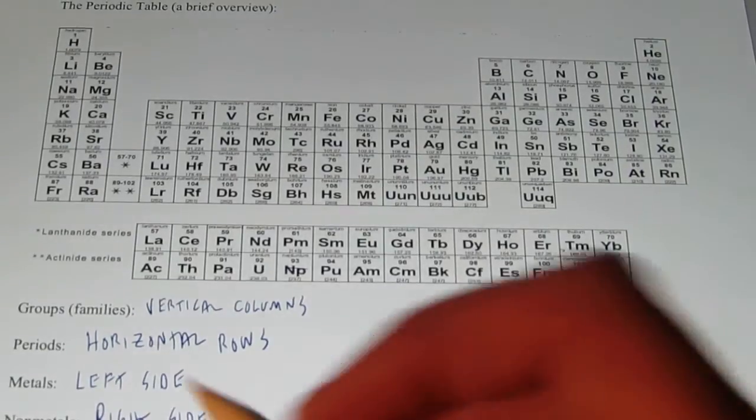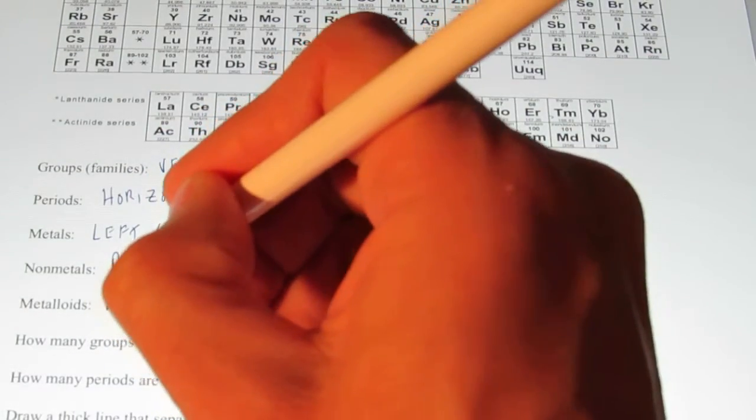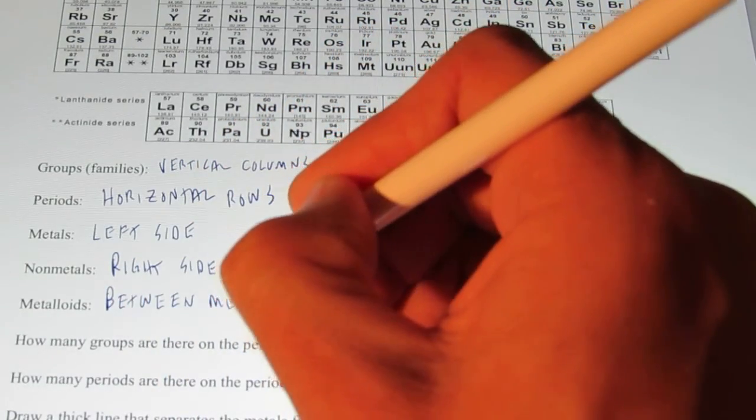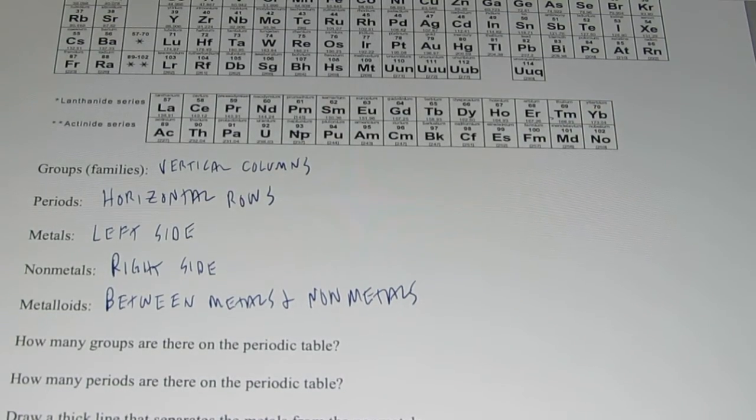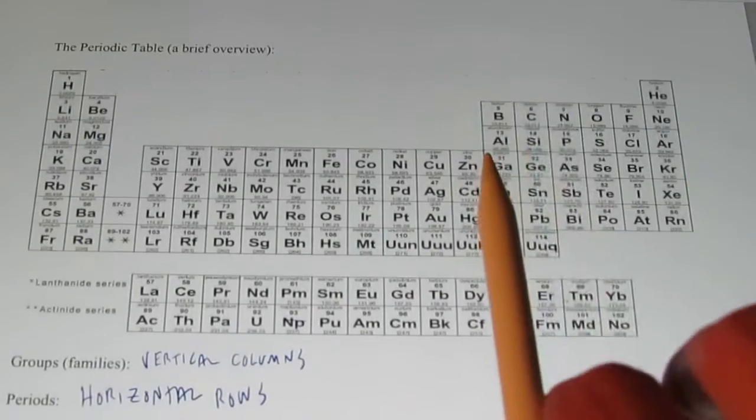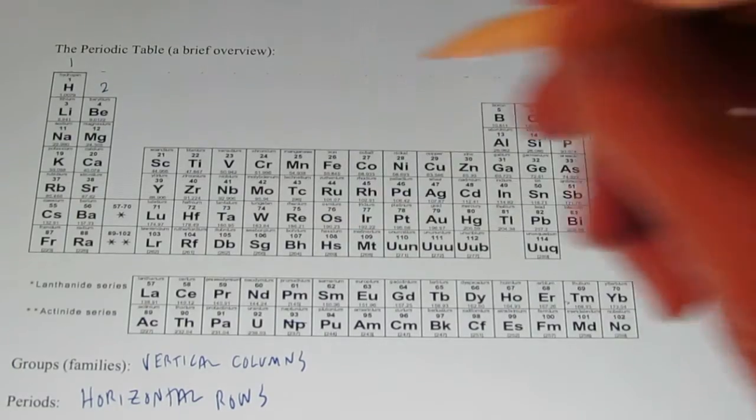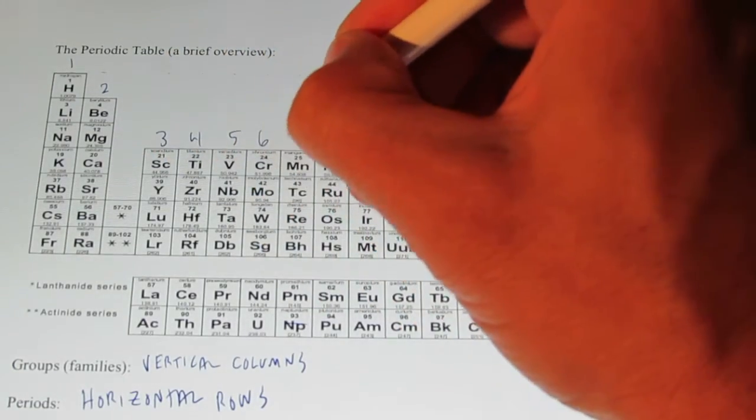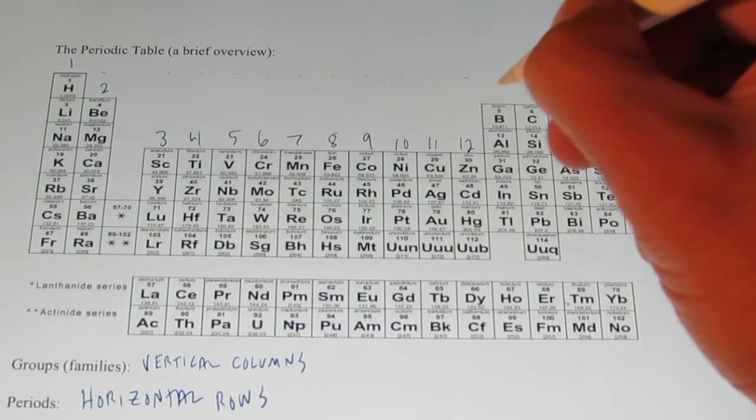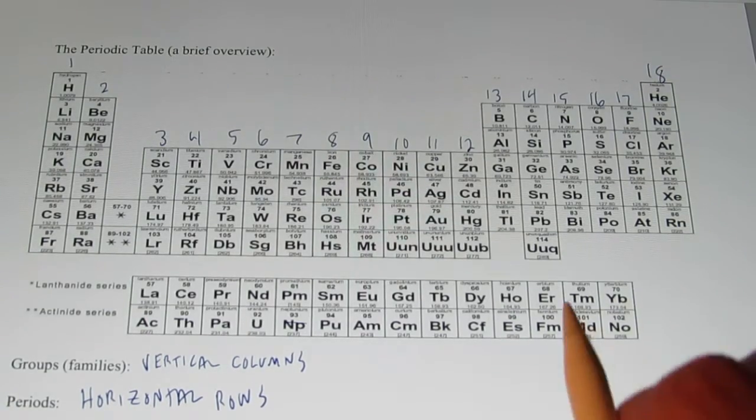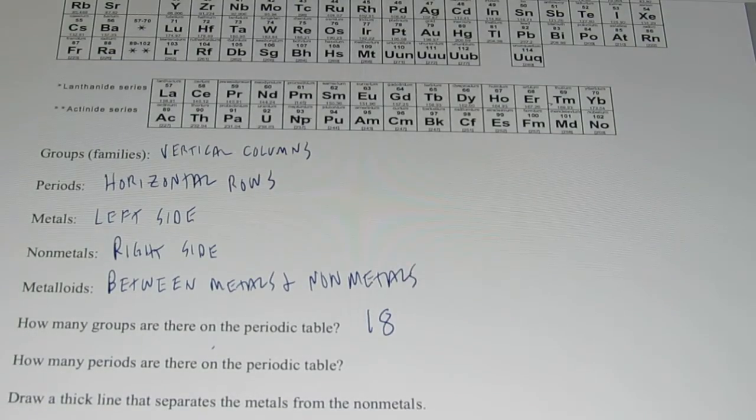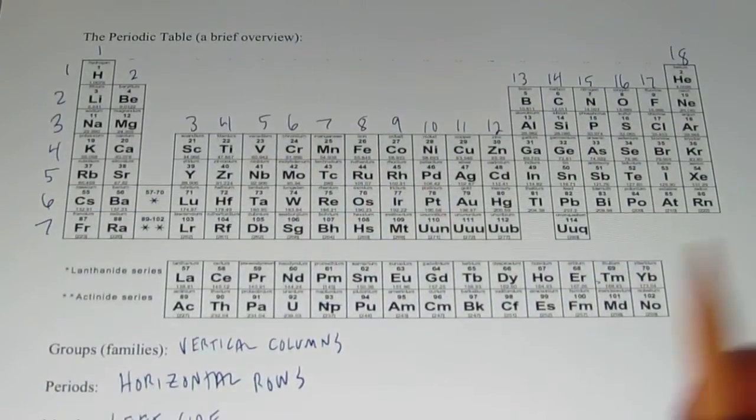The metalloids are located right between the metals and the non-metals. So, the metalloids are between the metals and the non-metals. So, let's count them up. How many groups are there on the periodic table? Let's see. We'll number these. We have 1, 2, 3, 4, 5, 6, 7, 8, 9, 10, 11, 12, 13, 14, 15, 16, 17, and 18. So, there are 18 groups on the periodic table. How many periods are there? Let's count those up. 1, 2, 3, 4, 5, 6, 7. Seven periods on the periodic table.